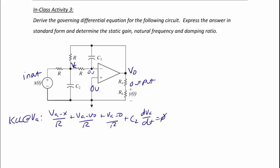Since no current flows into the op-amp's negative terminal, KCL at the negative terminal gives: negative VA over R, plus the current through C1 — which is negative C1 dVO dt — equals zero. We call this equation 2.